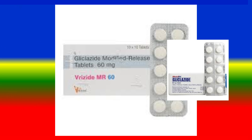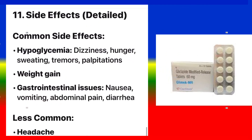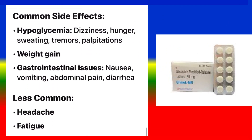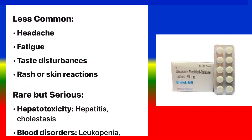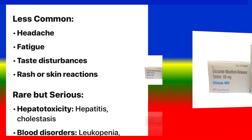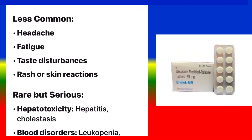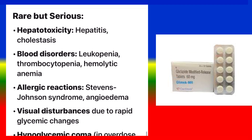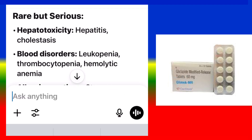Side effects — Common: hypoglycemia, weight gain, gastrointestinal issues (nausea, vomiting, abdominal pain, diarrhea). Less common: fatigue, taste disturbances, rash or skin reactions. Rare but serious: hepatotoxicity (hepatitis, cholestasis); blood disorders (leukopenia, thrombocytopenia, hemolytic anemia); allergic reactions including Stevens-Johnson syndrome and angioedema; visual disturbances due to rapid glycemic changes; hypoglycemic coma in overdose or missed meals.